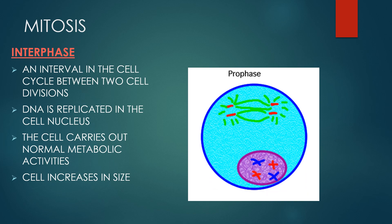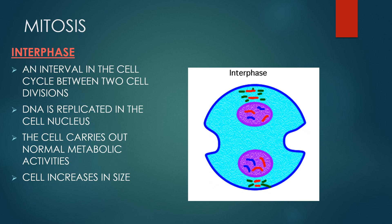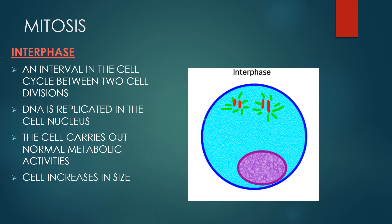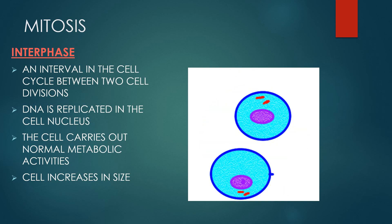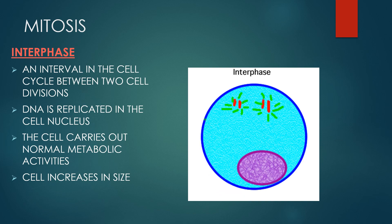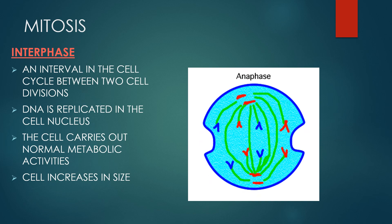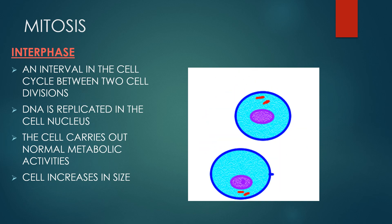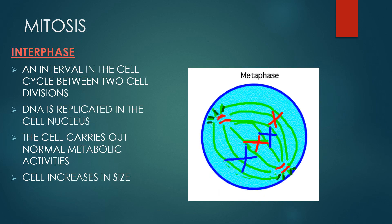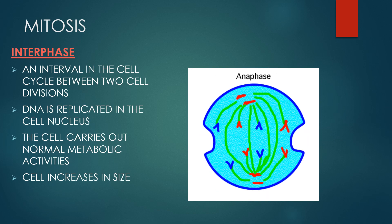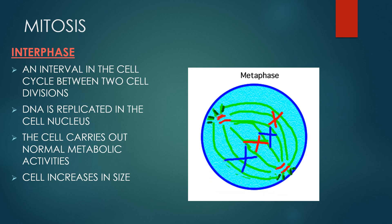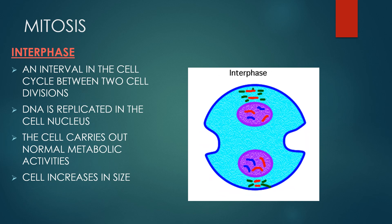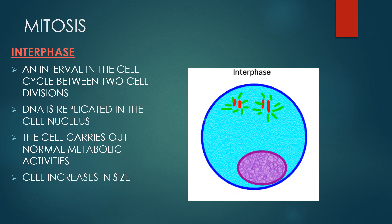Interphase is the phase of cell cycle in which a typical cell spends most of its life. It is the daily living or metabolic phase of the cell in which the cell obtains nutrients and metabolizes them, grows, replicates its DNA in preparation for mitosis and conducts other normal cell functions. It is an interval in the cell cycle between two cell divisions. The cell carries out its normal metabolic activities and the cell increases in size.